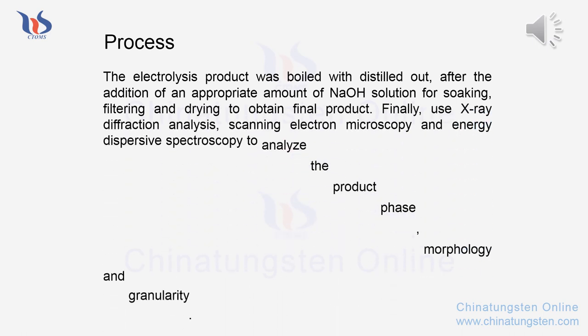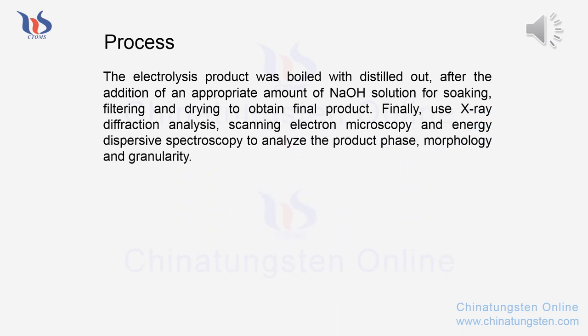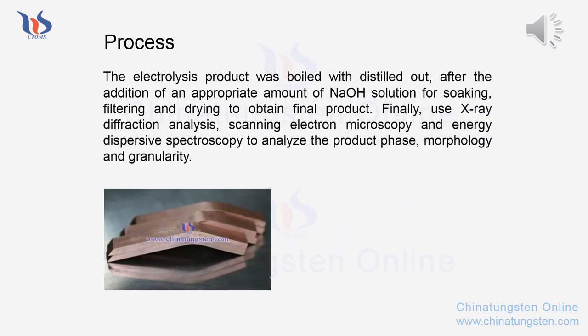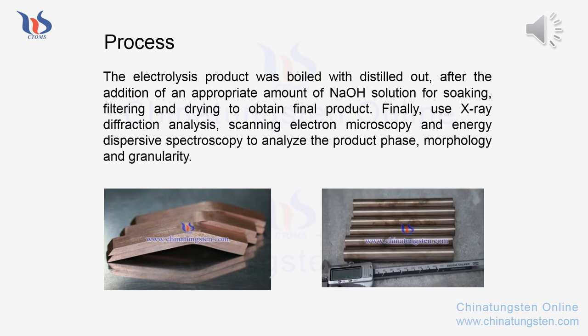The electrolysis product is boiled with distilled water, after which an appropriate amount of solution is added for soaking, followed by filtering and drying to obtain the final product. Finally, X-ray diffraction analysis, scanning electron microscopy, and energy dispersive spectroscopy are used to analyze the product phase, morphology, and granularity.